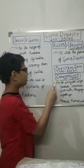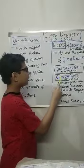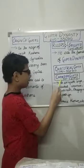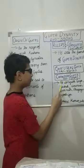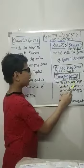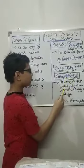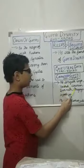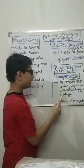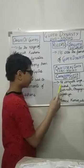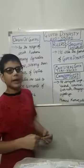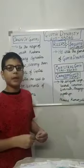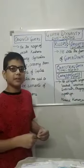Ghatotkacha's son, Chandra Gupta, became ruler in 320 AD. He married Kumara Devi, a Lichchhavi princess.